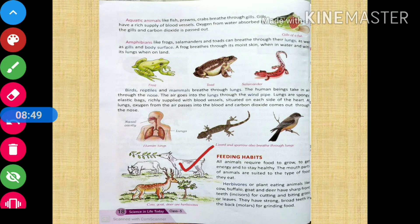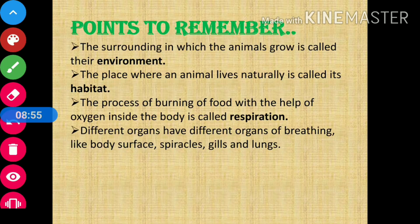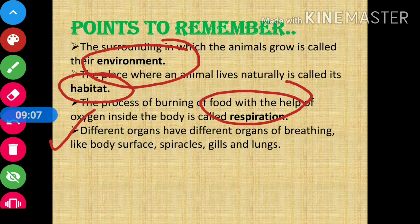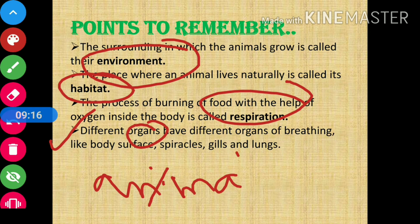The next topic is feeding habits, but before that, let us recap what we covered today. We read about what is environment, what is habitat, what is respiration, and how different animals have different organs of breathing — such as body surface, spiracles, gills, and lungs.